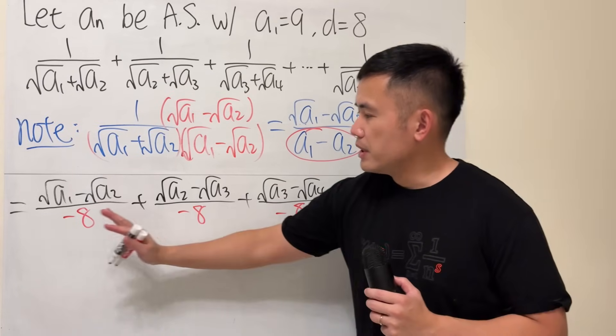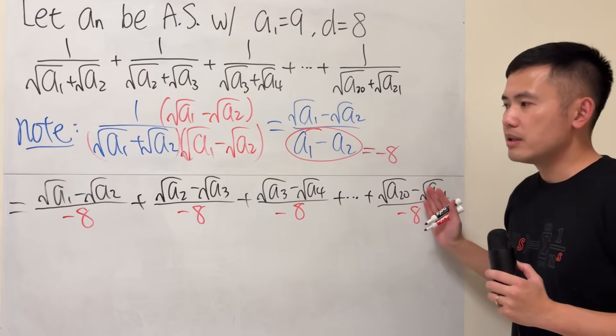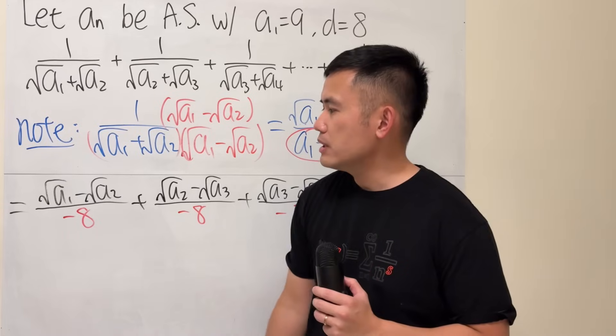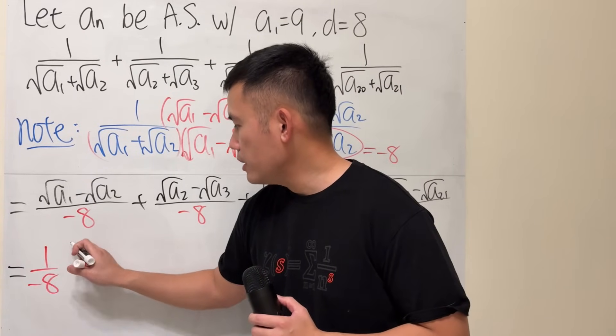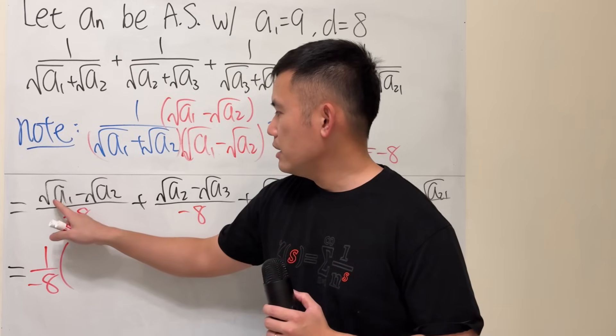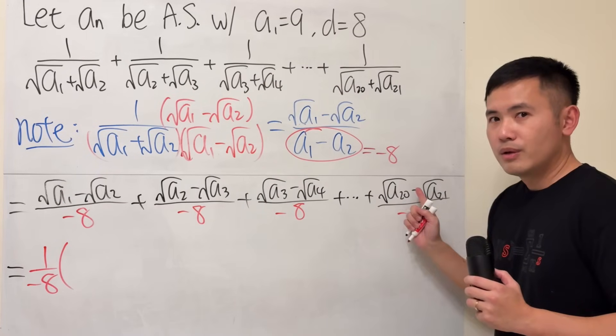Now, have a look. Because they all have the same denominator, we can kind of factor that out. So, we can have the 1 over negative 8 all the way in the front. And then, just look at the top. What's happening?